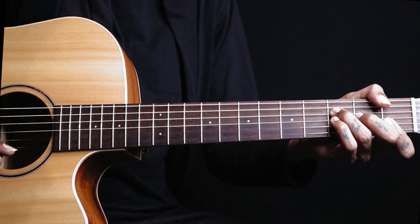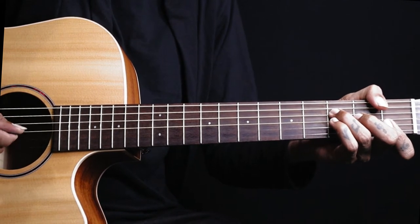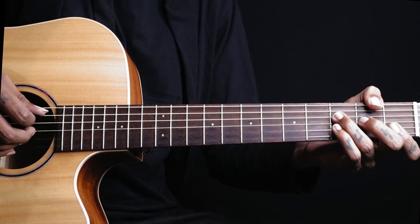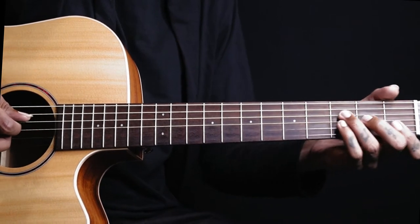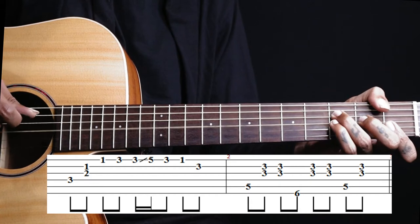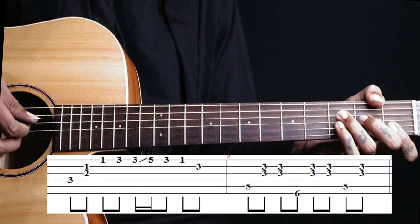So 4, 3, 2, 1. F chord. We hold this and again we are using hybrid picking in this lick now. So we play 4th string and pluck 3 and 2 together with our fingers.